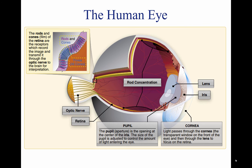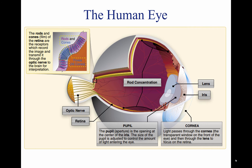The eye functions much like a camera. Its structure includes an aperture, a lens, a mechanism for focusing, and a surface for registering images. Light enters through the cornea at the front of the eyeball, travels through the lens, and falls on the retina. The retina contains light-sensitive cells that convert light energy into electrical impulses that travel through nerves to the brain. The brain interprets the electrical signals to form images. There are two kinds of light-sensitive cells in the eyes: rods and cones. The cones are responsible for all color vision, from appreciating a glorious sunset to discerning the subtle shades in a fine painting.